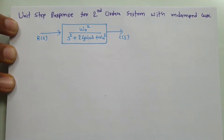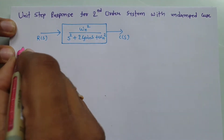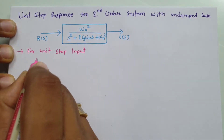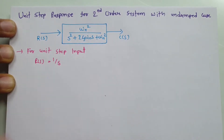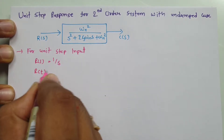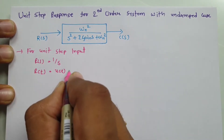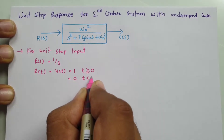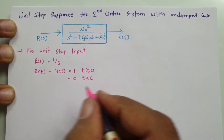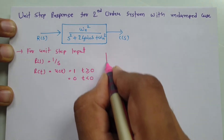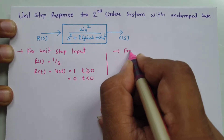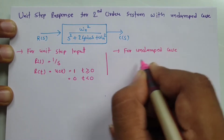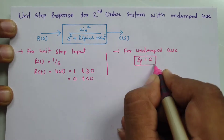Now the data given is: input is unit step input. So for unit step input, R(s) equals 1 by s. In time domain, r(t) equals u(t), which is 1 for time t greater than or equal to 0, and 0 for t less than 0. The second condition is undamped, so the value of zeta equals 0.